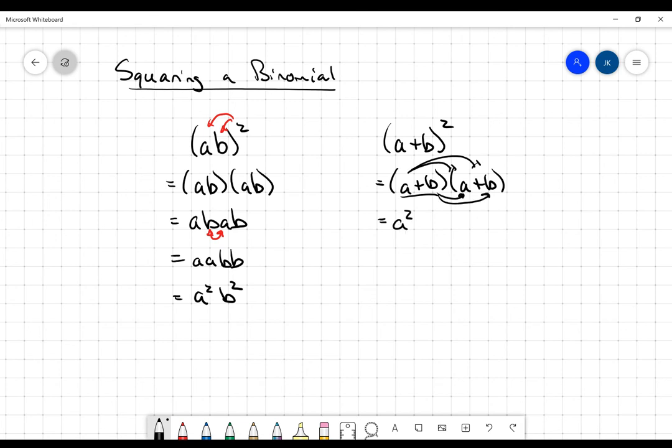So I get A times A is A squared, plus A times B, plus B times A, which I'm going to write as A times B, and then plus B times B is B squared. This becomes A squared plus 2AB plus B squared.